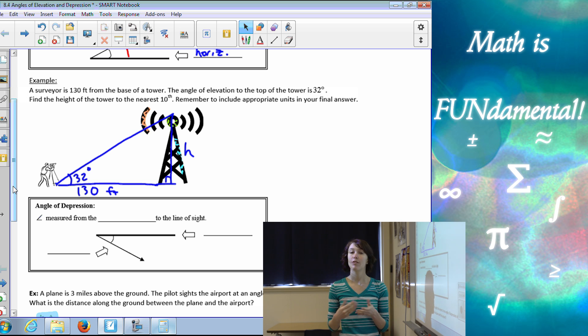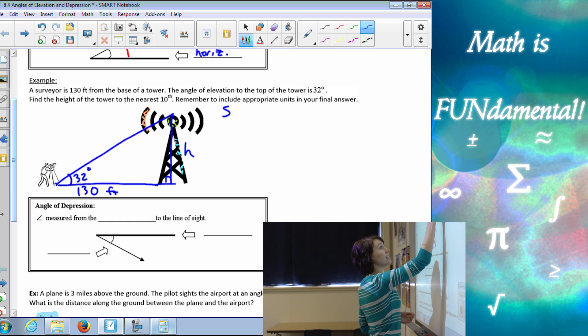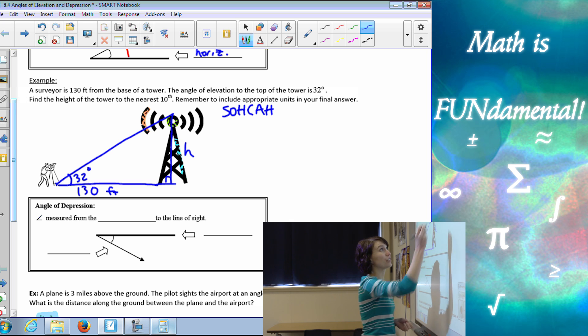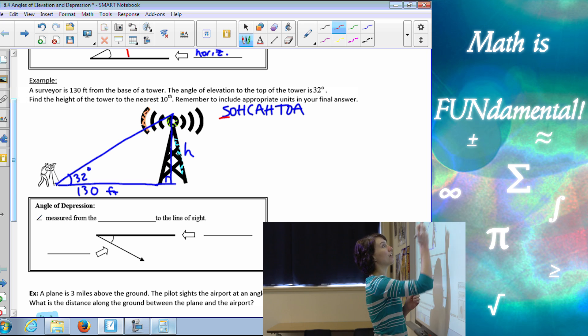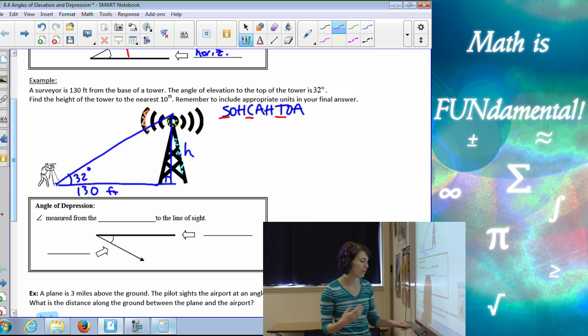So that leaves us with our right triangle trigonometry, our sine, cosine, tangent. So we learned in our last video this little helpful hint which we like to refer to as SOHCAHTOA. And this helps us figure out whether to use sine or cosine or tangent. So sine is opposite over hypotenuse, cosine is adjacent over hypotenuse, and tangent is opposite over adjacent. Those are what those little letters help us remember.